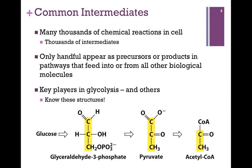We're going to look at the key players in glycolysis and some of the other pathways. These are pictured at the bottom of the screen here, and you do need to know these structures. These are all breakdown products of glucose. Glucose is initially broken down to glyceraldehyde-3-phosphate in glycolysis, and the end product of that pathway is pyruvate. Then we have the transition step to convert that to acetyl-CoA. These are very key intermediates, and you need to know these structures.